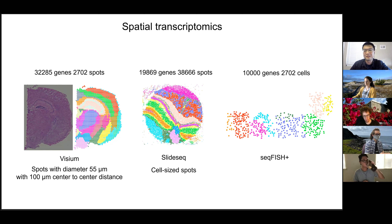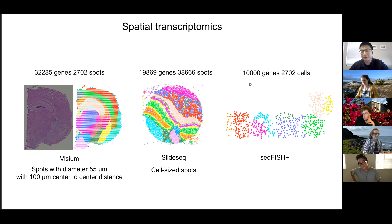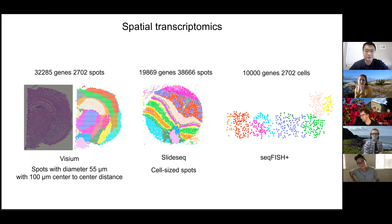Another technique that achieves a better balance between resolution and coverage is Slide-seq. It's still not single-cell resolution, but it can measure thousands of genes in thousands of spots, and each spot will have a size similar to a single cell. We can think about the cells as glass balls compactly placed in 2D space, with another layer of glass balls capturing the mRNA molecules in the first layer, though there's not a one-to-one correspondence.